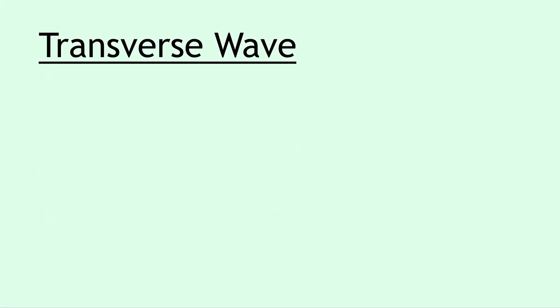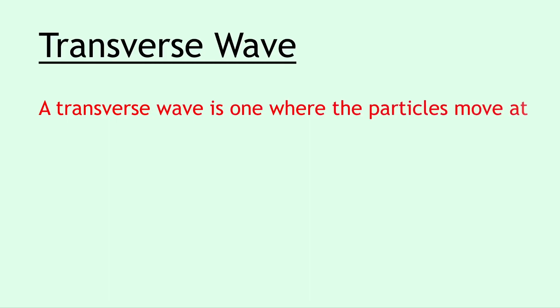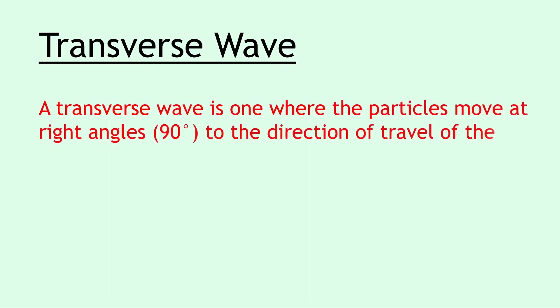Next we have a transverse wave, and a transverse wave is one where the particles move at right angles, i.e. 90 degrees, to the direction of travel of the wave. Another way of saying this is that the particles move perpendicular to the direction of the wave travel, or the wave energy.